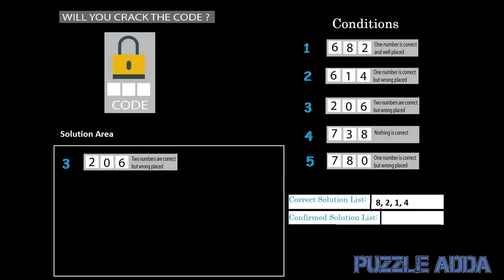Now adding condition 3 to the solution area, which says two numbers are correct but wrongly placed. According to conditions 1 and 2 we have already established that digit 6 should not be in our correct solution list. So with condition 3 we can tell that 2 and 0 are the two numbers which are correct but wrongly placed. We will now add 2 and 0 to our confirmed solution list.